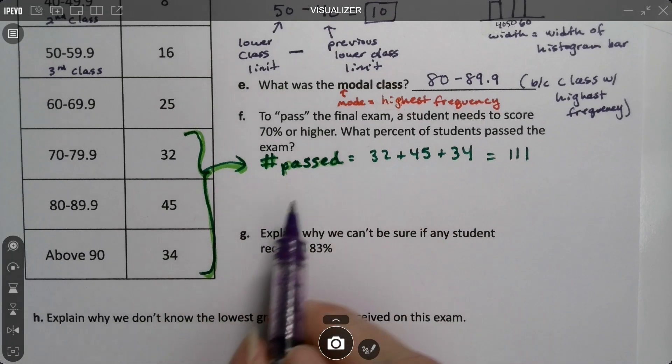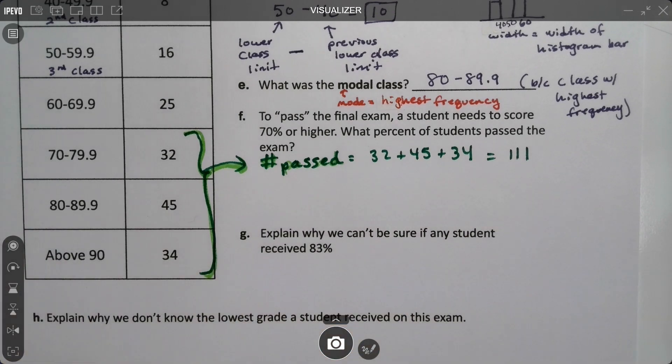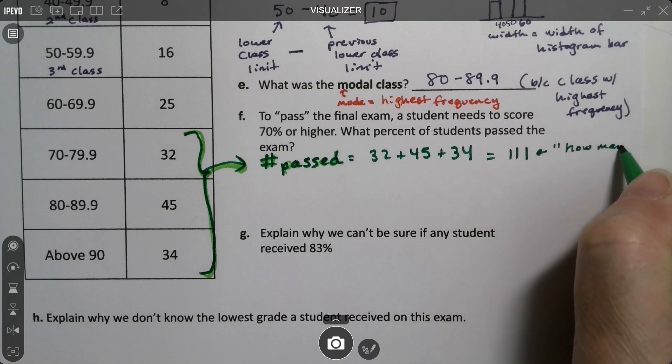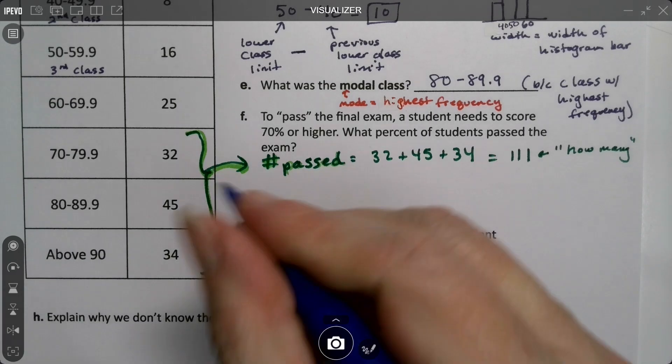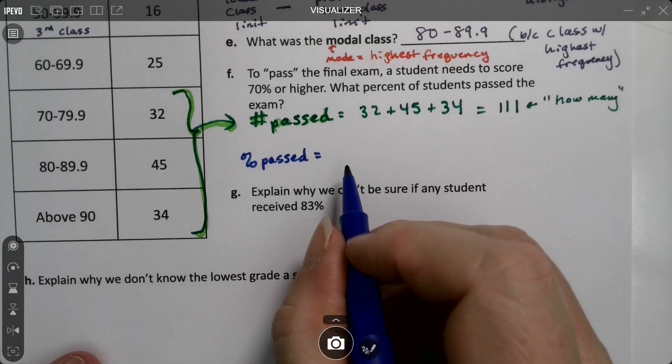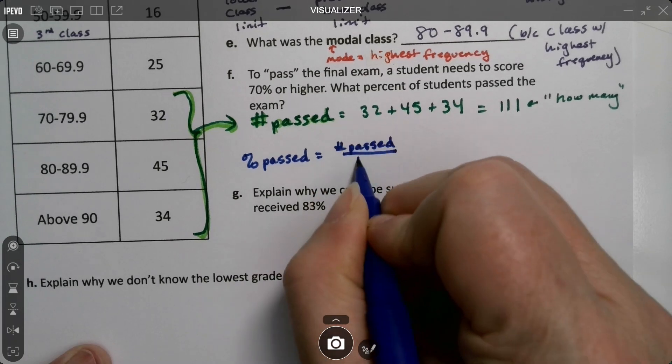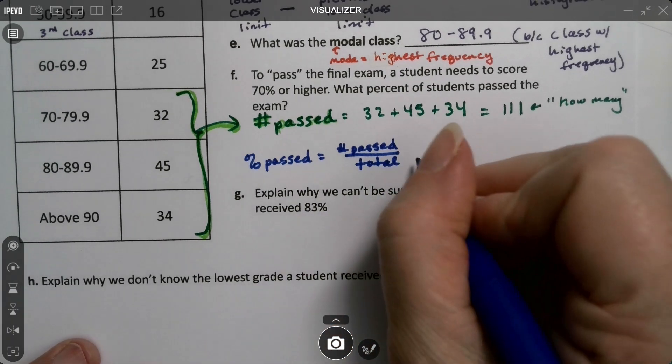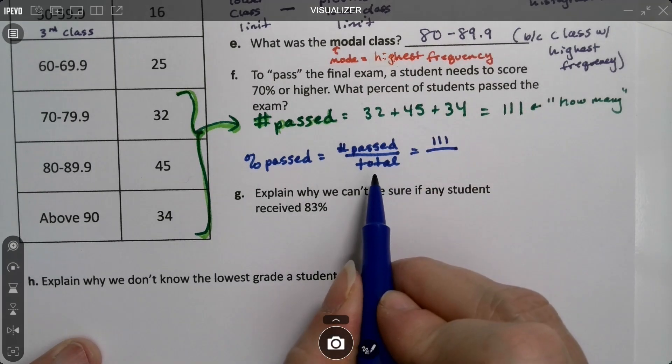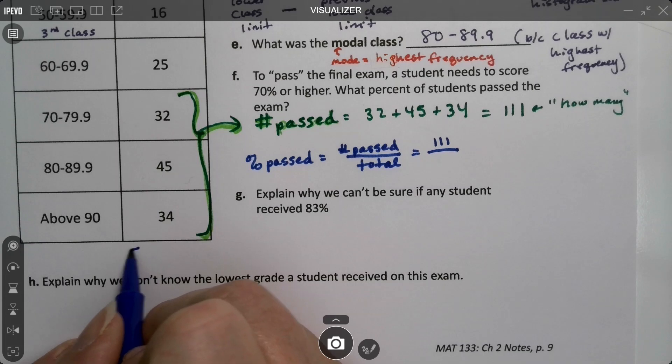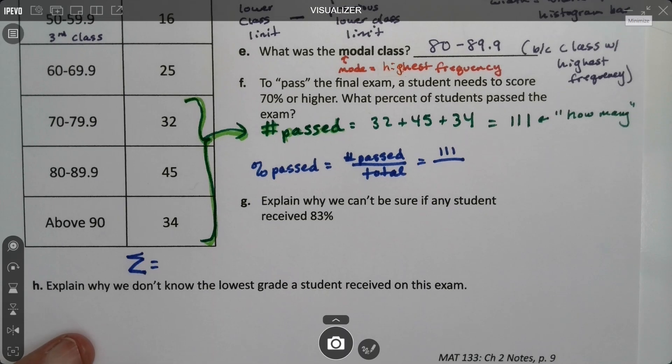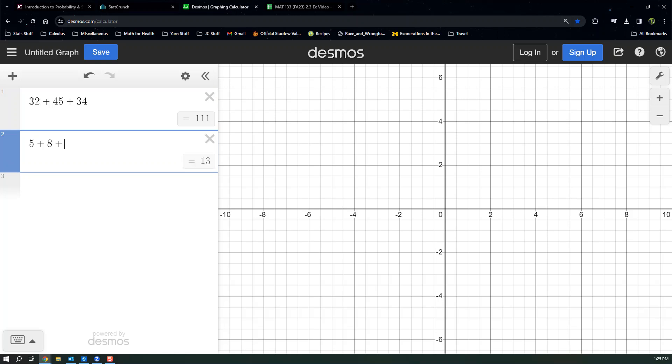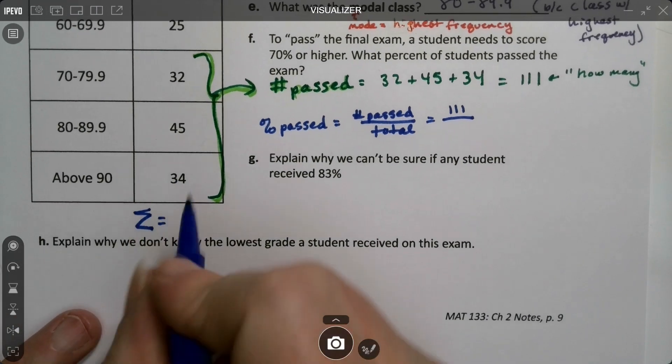So this is 111. Now what's the percentage that passed? Because that's a different question. This is how many students passed. But I want the percentage. The percentage that passed is a different question. For that, I need to take the number that passed and divide it by the total. I know how many passed, that's 111. For the total, I need to find the total of my frequencies here. I need the big sum of all of these frequencies. So 5 plus 8 plus 16 plus 25 plus 32, and I get 165. So the sum is 165. That's the total.